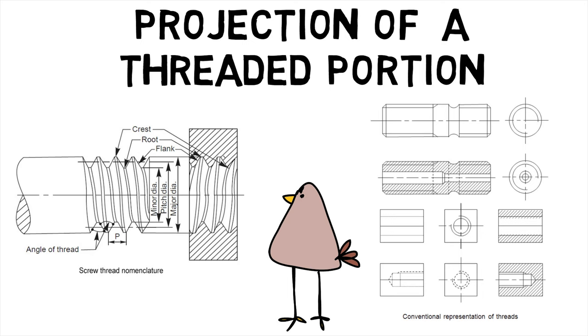In the view from side, the threaded roots are represented by a portion of a circle drawn with a continuous line of length approximately three quarters of the circumference.